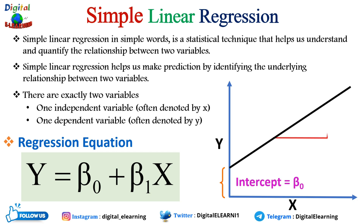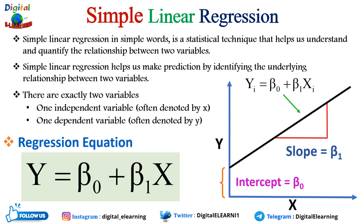b₁ denotes the slope of the regression line, or the change in the value of y for every one unit of x. y is the dependent or response variable because it depends on the value of x, while x is the independent variable. The straight line you see is the regression line, and its equation is known as the regression equation. Regression analysis finds the equation of the line that best describes the relationship between two variables.